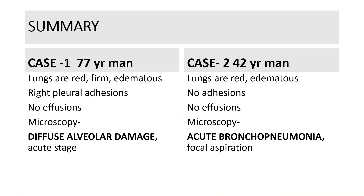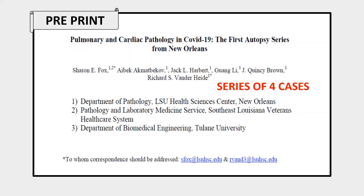To summarize the findings in the two cases in this report: the lungs in both cases were red, heavy, and edematous. Microscopic findings of the 77-year-old man showed diffuse alveolar damage, whereas the other case showed acute bronchopneumonia with focal aspiration. The next is a case series in preprint that enumerates the relevant cardiopulmonary findings of a series of four cases from the United States with SARS-CoV-2 infection.